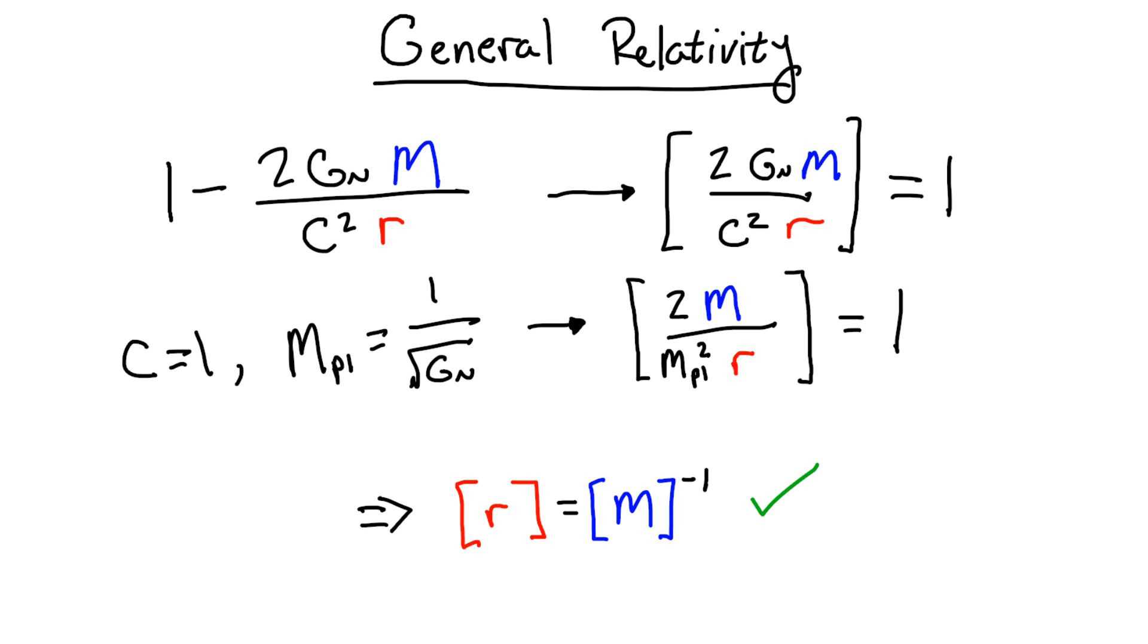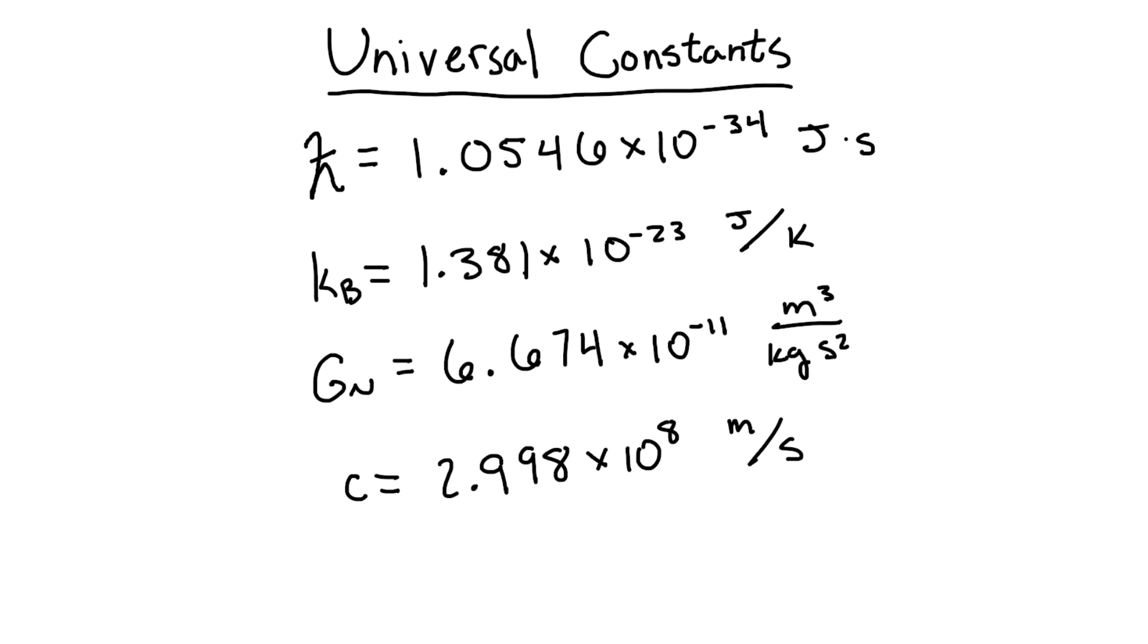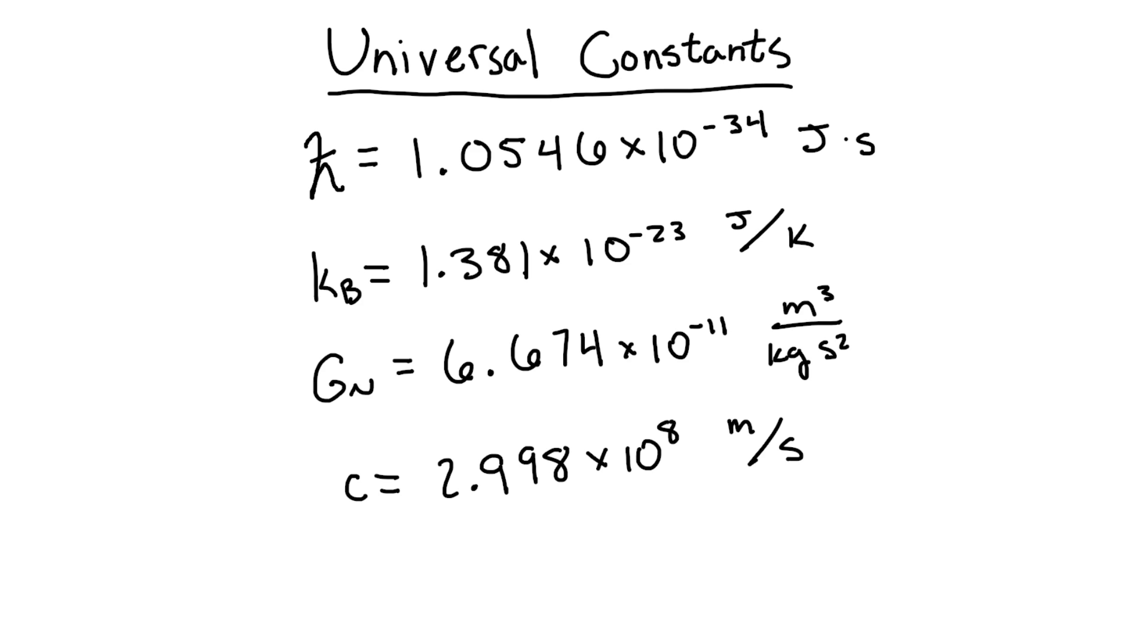OK, so I've talked about what the fundamental constants tell us when they show up in theories, but now let's ask the question that both annoys and intrigues every physicist. But why? Why do the constants have the values that they have?